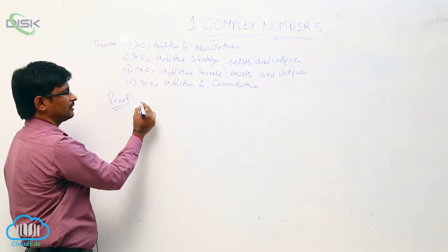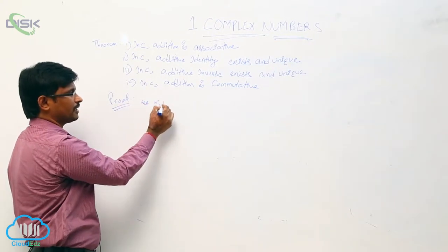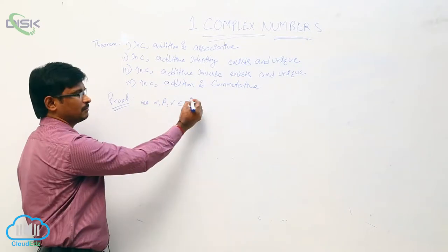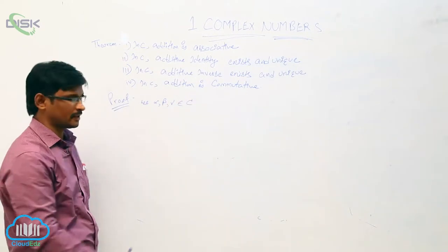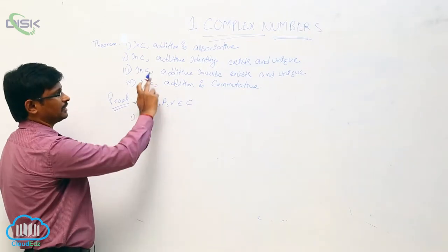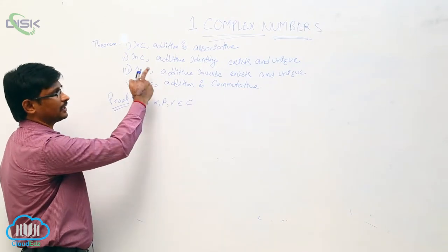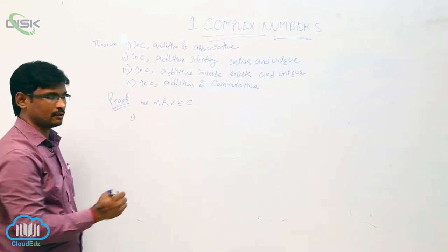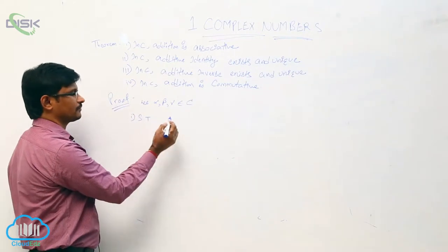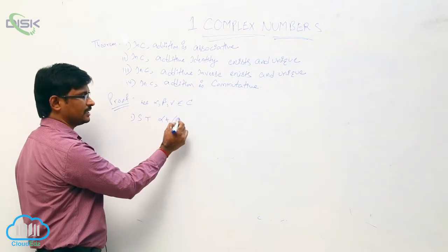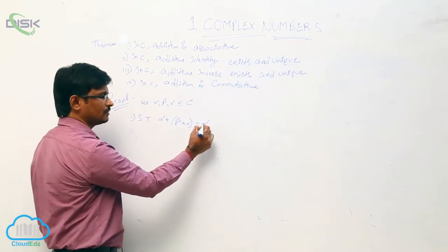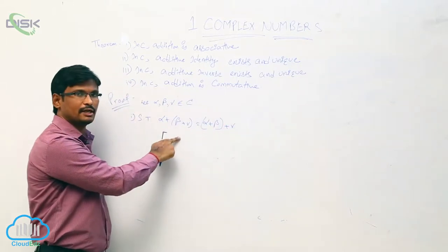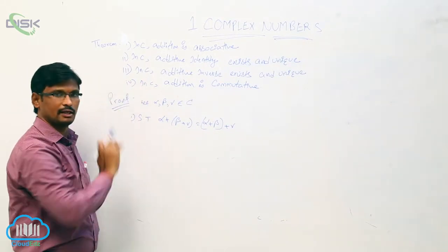First, we will consider: let alpha, beta, gamma — these three belong to complex numbers. In the first property, we have to prove that addition is associative. That is, alpha plus (beta plus gamma) equal to (alpha plus beta) plus gamma. This is the associative property in complex numbers.